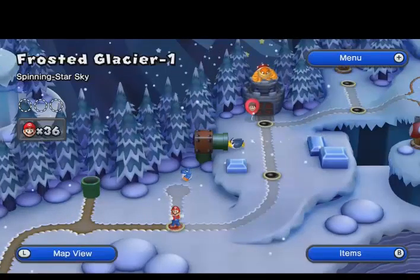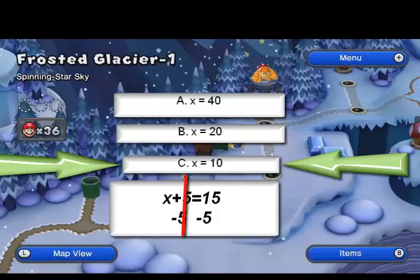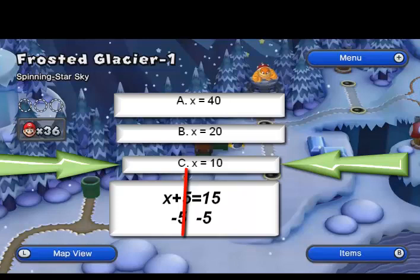Now when you try, you add the opposite again. Since it's positive 5, you make it into a negative 5. Now you cancel out the positive 5 and the negative 5, and then when you subtract 5 from 15, you get 10, which is... Let's just see.